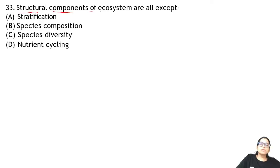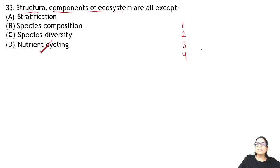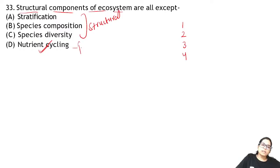Question 33: structural components of the ecosystem. Nutrient cycling is not a structural component — it is a functional component. Energy transfer, nutrient cycling, productivity, and mineral cycling are all functional. The three structural components build the structure, while the functional ones play a role in functions.